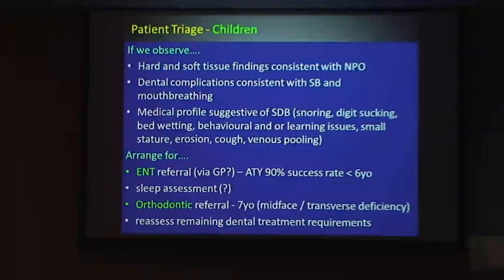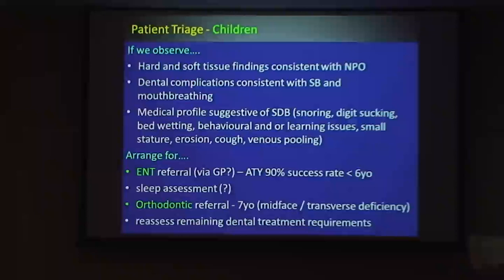Professor McIntosh's studies show he can get about 80–90% success rate with an adenotonsillectomy performed under six years of age. That improves breathing, but then we've got the hangover — the dental compensations left behind: a narrow maxilla, a slightly retrusive mandible. We may need some growth modification to mop that up.